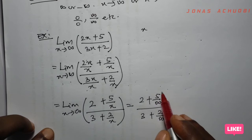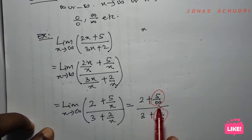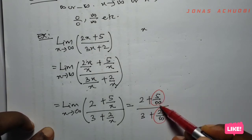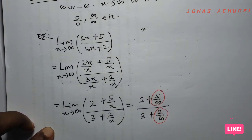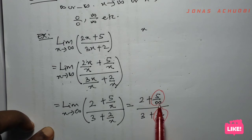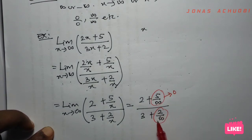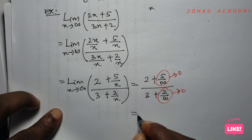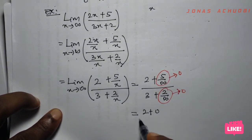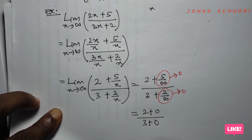Imagine infinity as a very large number, like 1 million. When you divide 5 by 1 million, the result is extremely small — essentially 0. Likewise, 2 divided by infinity also turns to 0. So what remains is (2 + 0) / (3 + 0) = 2/3, which is our limit.